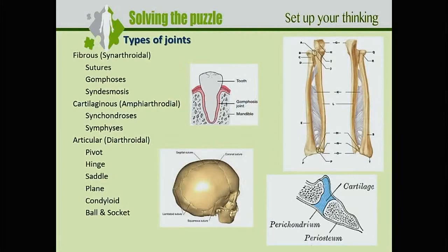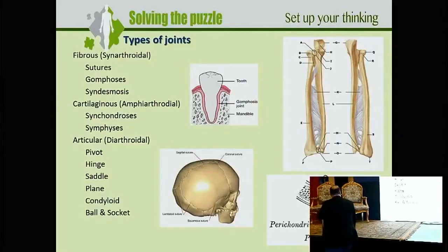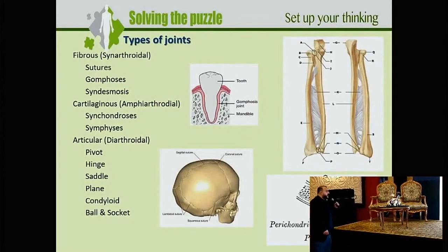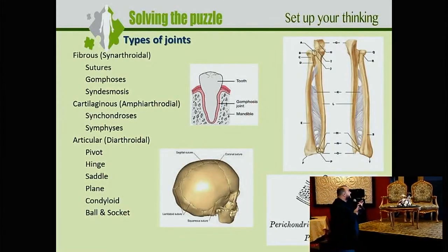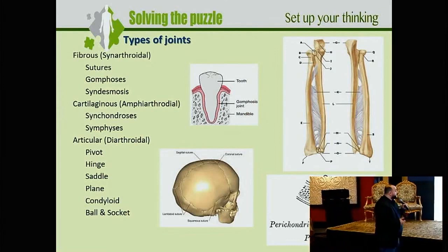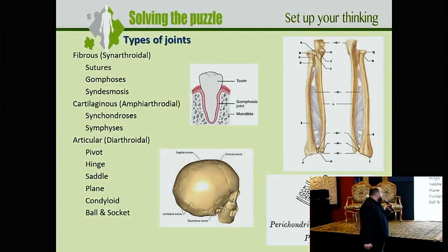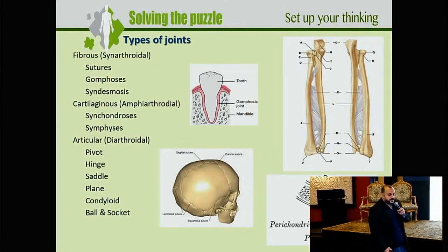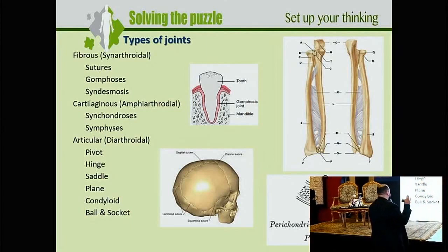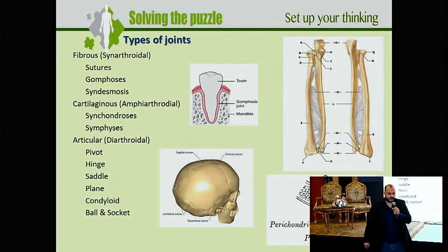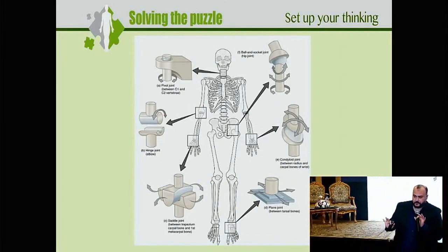Before we go through that, we have these types of joints: the fibrous or synarthrodial, the cartilaginous or amphiarthrodial, and the articular. The fibrous joints are like sutures, gomphoses in the teeth, and syndesmosis. The cartilaginous are like synchondrosis and symphysis. The articular joints include pivot, hinge, saddle, plane, condyloid, and ball-and-socket joints.